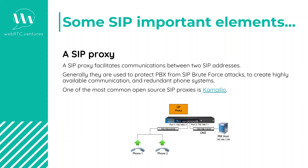The proxy server routes the request within the network to a remote proxy server or to an off-domain network such as the PSTN. In this case, it's routing into a PBX. Generally, they are used to protect the PBX from SIP brute force attacks. One of the most common open-source SIP proxies is Kamailio. It uses its own language, similar to C, and is pretty much used only for SIP-related proxying.